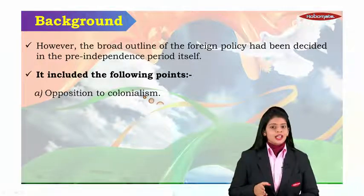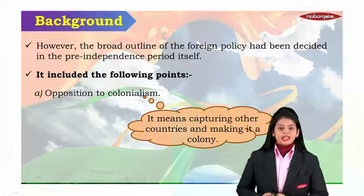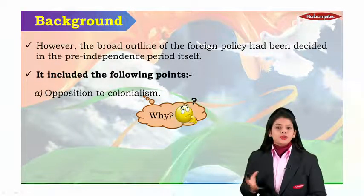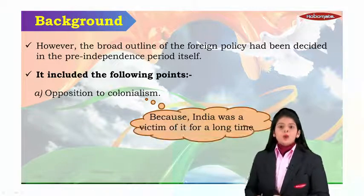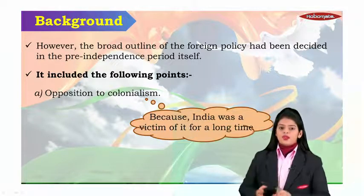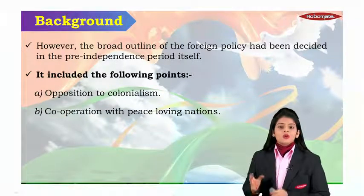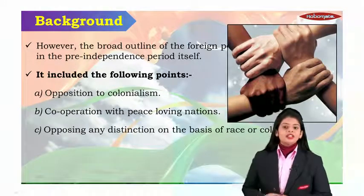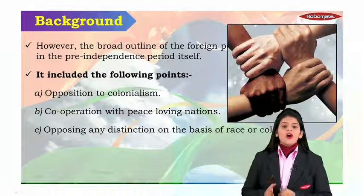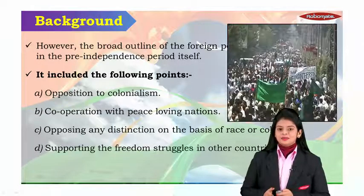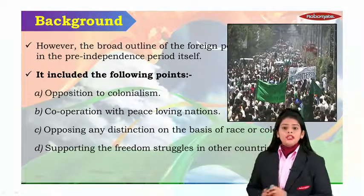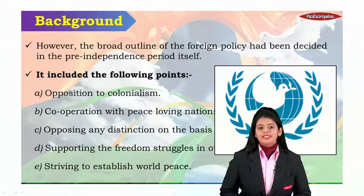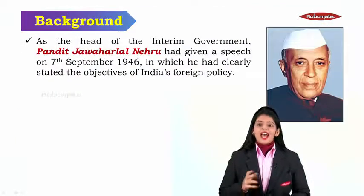The key pre-independence principles include: opposition to colonialism — colonialism means capturing other countries and making them a colony, and India opposed it because India was a victim of it for a long time. Other principles include cooperation with peace-loving nations, opposition to any distinction on the basis of race or color, supporting freedom struggles in other countries, and striving to establish world peace.